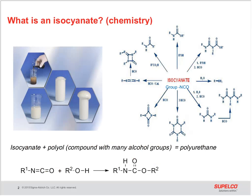For those who don't know, isocyanates are the reactive component used in making polyurethane materials. Simple polyurethanes can be made by reacting an isocyanate with a polyol compound. Other forms of polyurethane materials can be created with active hydrogen-containing compounds, such as alcohols, carboxylic acids, and amines, yielding products with various characteristics.